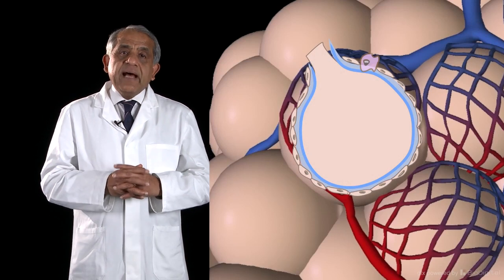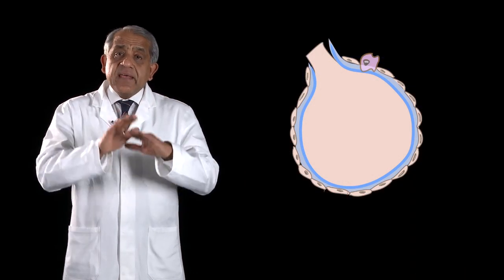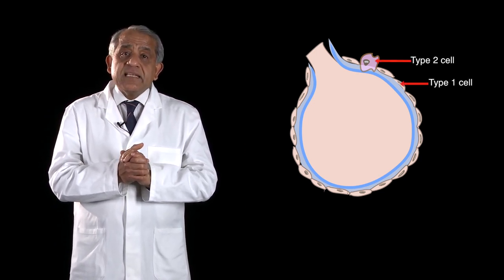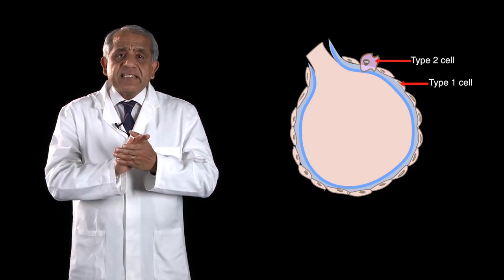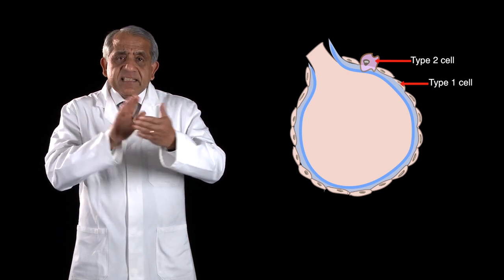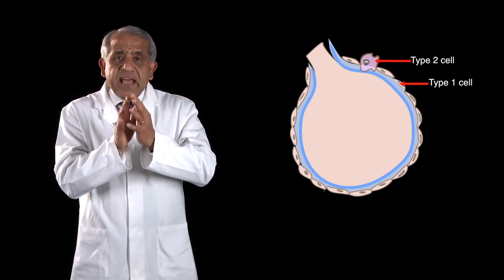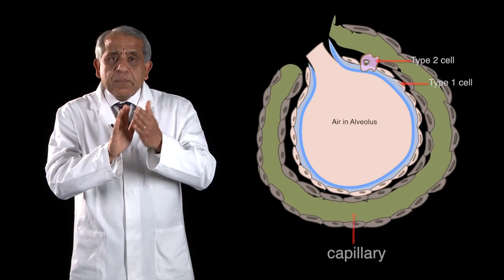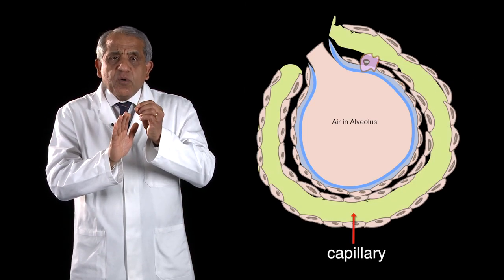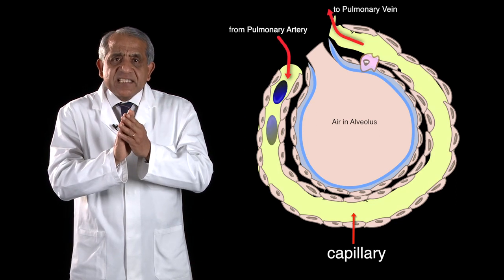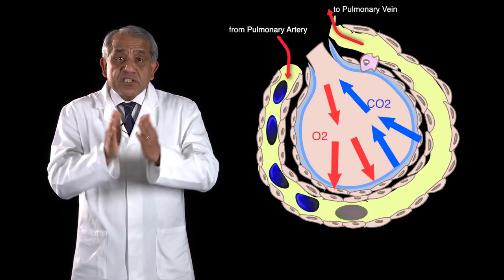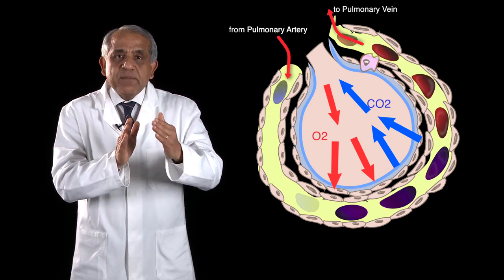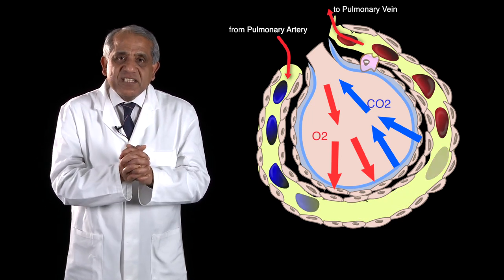The alveolar wall has two types of cells lining it, and they are both very thin cells, called type 1 and type 2 cells. The type 1 cells are really flat, and it is through these cells that gaseous exchange takes place. On one side you have air in the alveolus and the flattened type 1 cell, and on the other side a thin capillary so small as to accommodate just one or two red cells. The recently inspired oxygen in the alveolus goes through the type 1 cell into the red blood cell within the thin capillary on the other side.